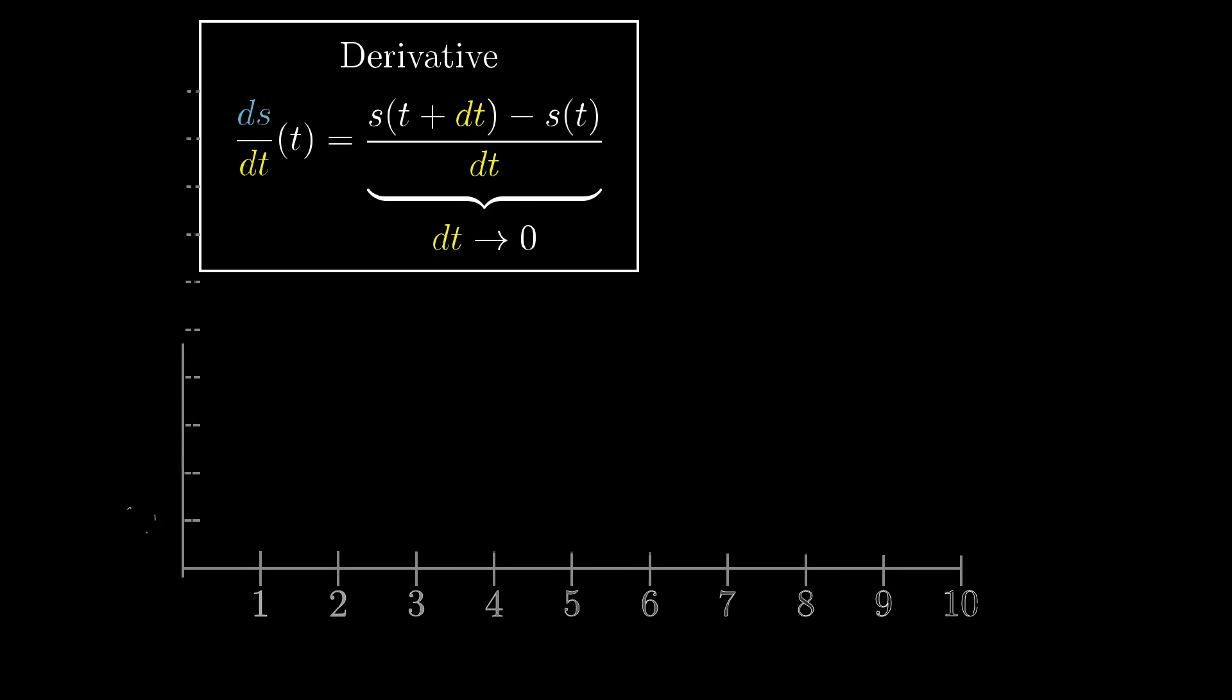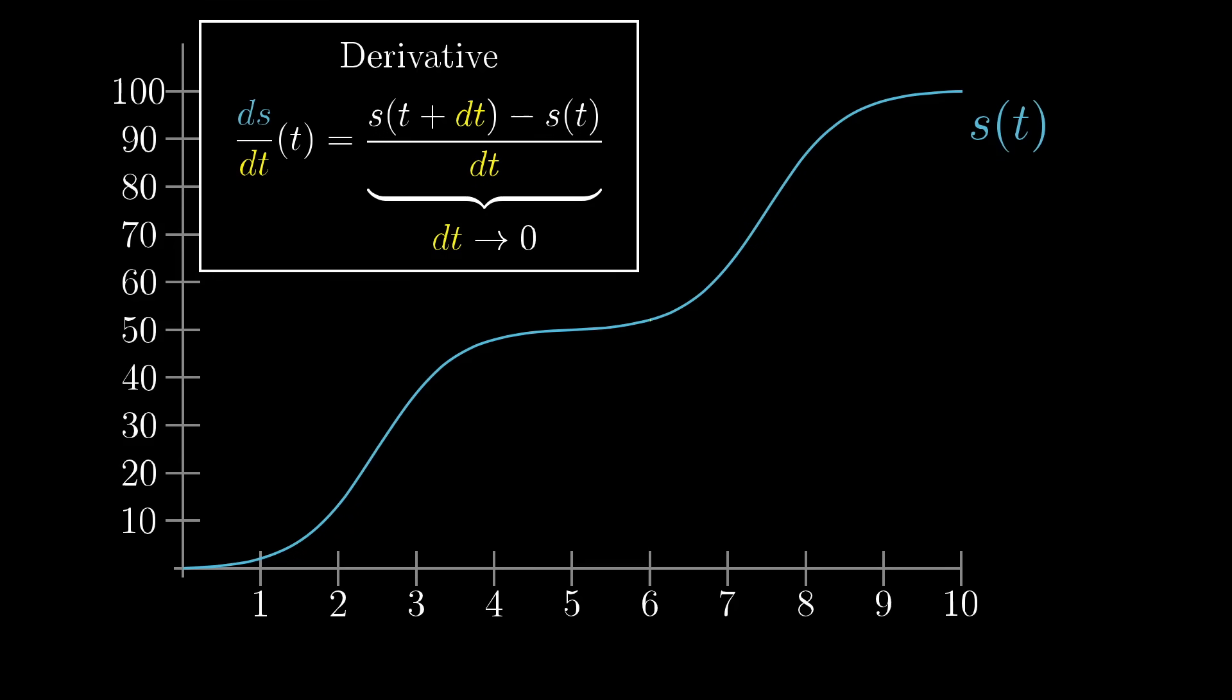Luckily, there is a really nice visual understanding for what it means to ask what this ratio approaches. Remember, for any specific choice of dt, this ratio ds/dt is the slope of a line passing through two separate points on the graph, right? Well, as dt approaches 0, and as those two points approach each other, the slope of the line approaches the slope of a line that's tangent to the graph at whatever point t we're looking at.